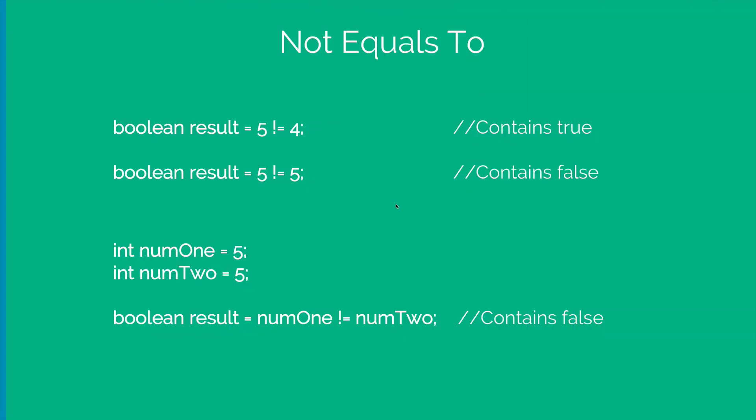Same way we have the opposite of equals equals which would be not equals to. So 5 not equals 4 is true, 5 not equals 5 would be false.